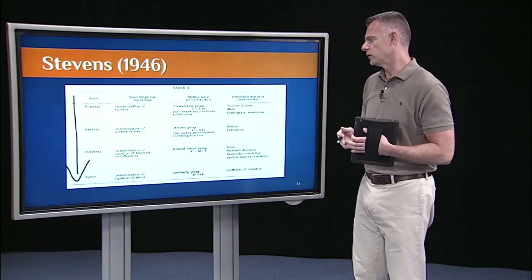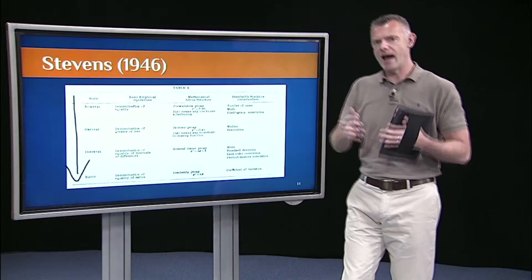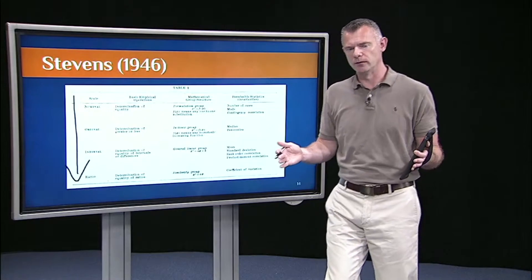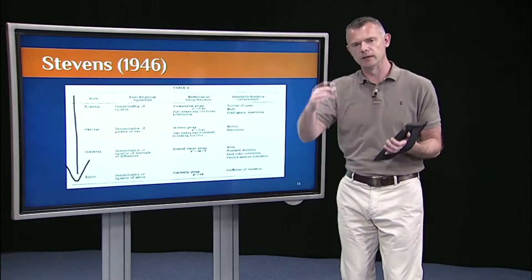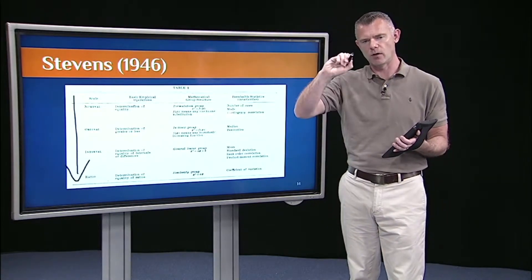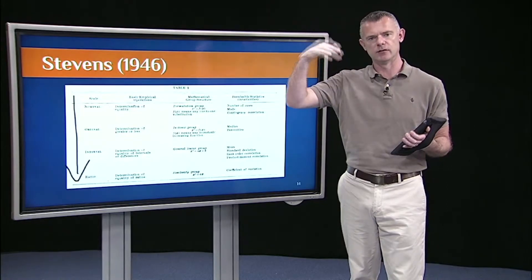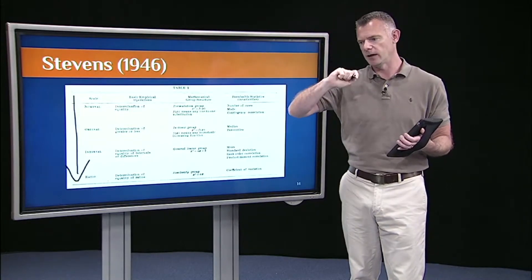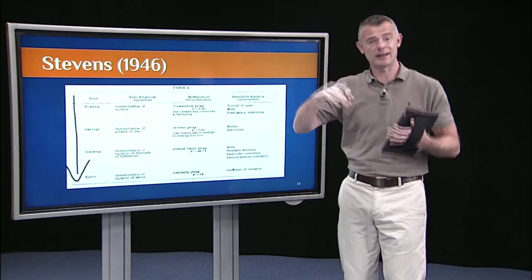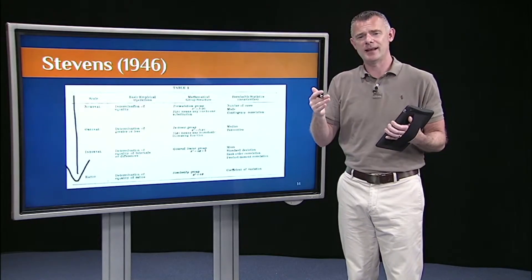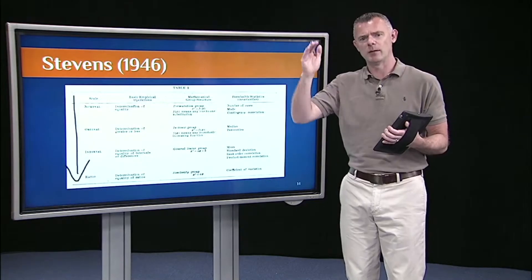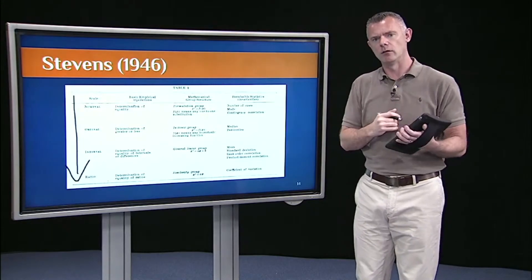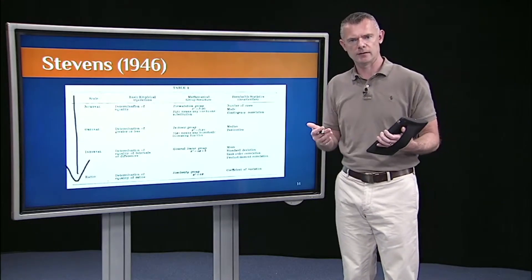With interval, I can ask questions about by how much are you different. If I just have rank orderings, if all I know is you come from the country that has the greatest population and then I know that you come from the country that has the second greatest population, I can ask what's the difference in population? That's what interval and ratio variables allow us to ask.